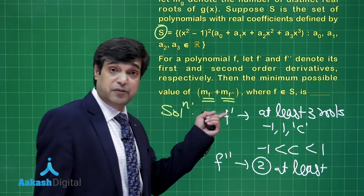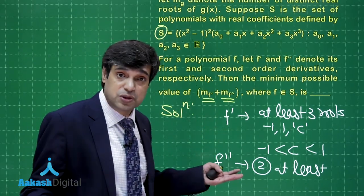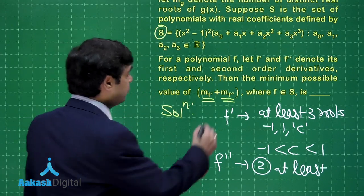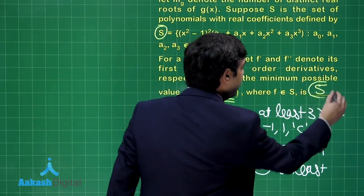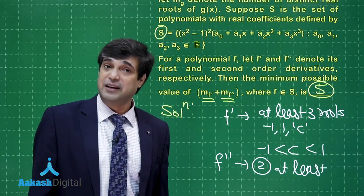Now f double dash will have at least two roots. That is why we have f dash is having at least three roots, so its derivative will have at least two roots. So the question is saying what is the minimum possible value for this sum? Obviously this is 5. I am sure this part is clear. Time to take up the next question now.